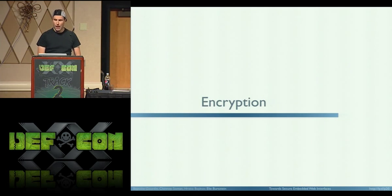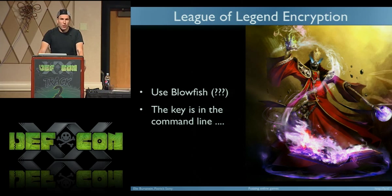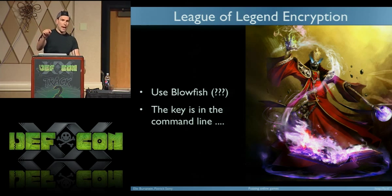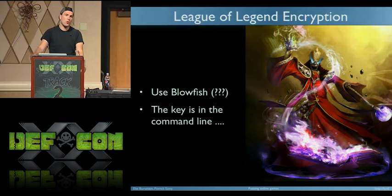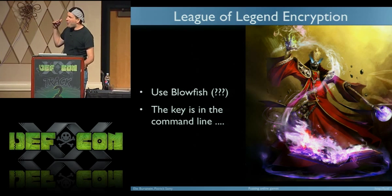Now, encryption. Let's start with the easy one: League of Legends. League of Legends uses Blowfish — I have no idea why they chose Blowfish, which is slow, but someone must have read that it's great. League of Legends has two binaries: one is the launcher where you find your game and click play, which then launches the game. The interesting thing is that when you click launch, the Blowfish key appears in the command line.